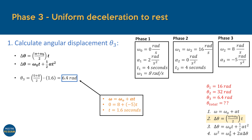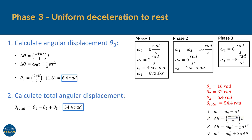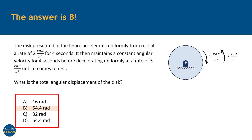Finally, the total angular displacement of the disk can be found as 54.4 radians through simple addition. That completes our problem. By reviewing the answer options, we can see that the final answer is equal to B.